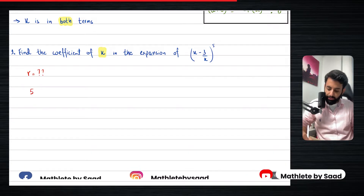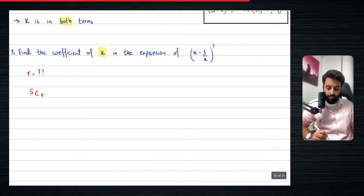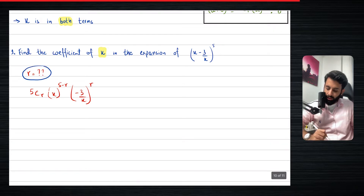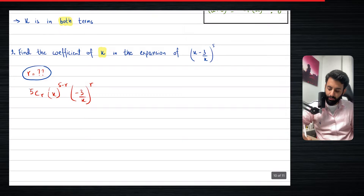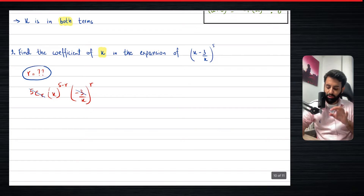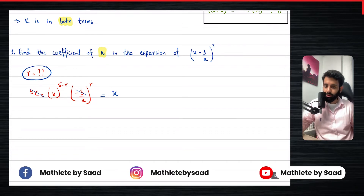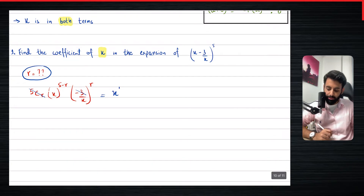Without knowing the value of r, the general term looks like: 5Cr · x to the power (5 − r) · (−3/x) to the power r. Once you have written this down, the objective should be clear — we are looking for the value of r. The next step is to ignore everything that does not involve x: we ignore 5Cr temporarily, and we ignore the −3 because it does not involve x. We focus only on the x terms.